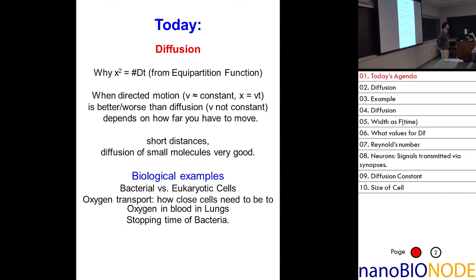So diffusion is sufficiently fast for small distances — like from one side of the cell to another. The cell is so small, so x is very small, therefore t is very small.